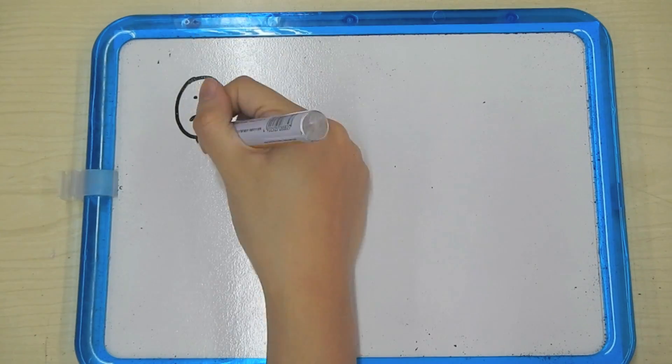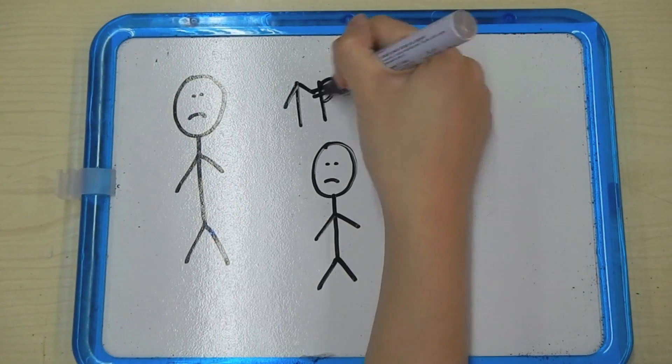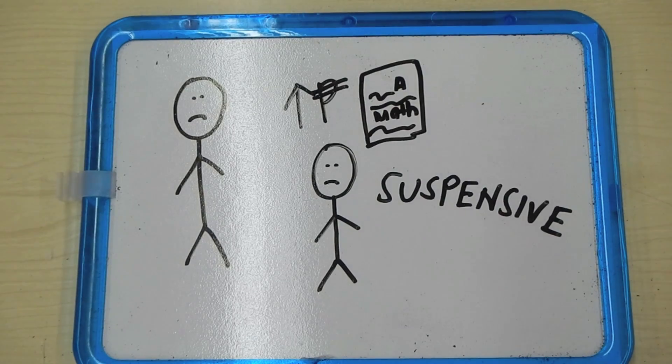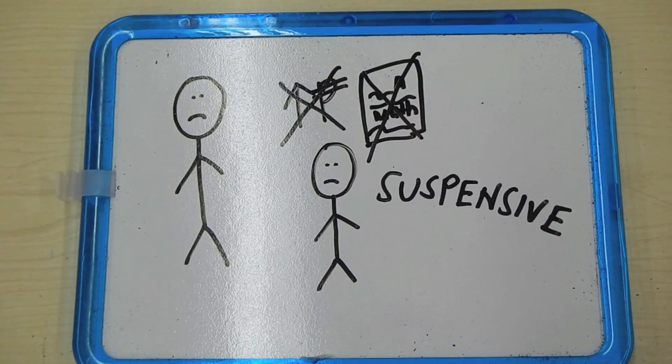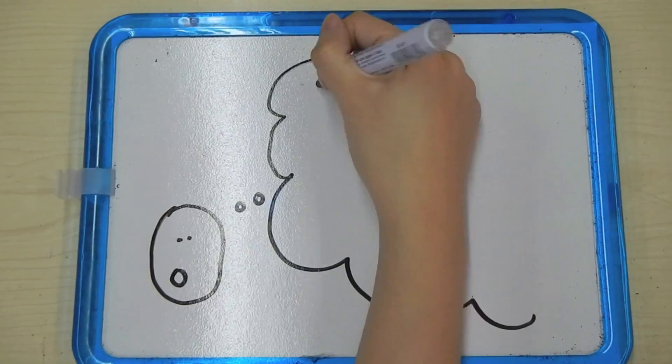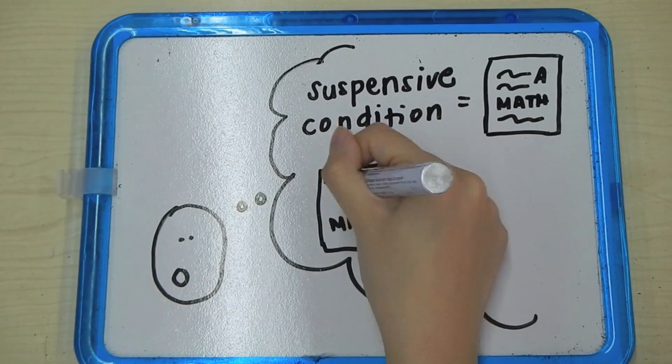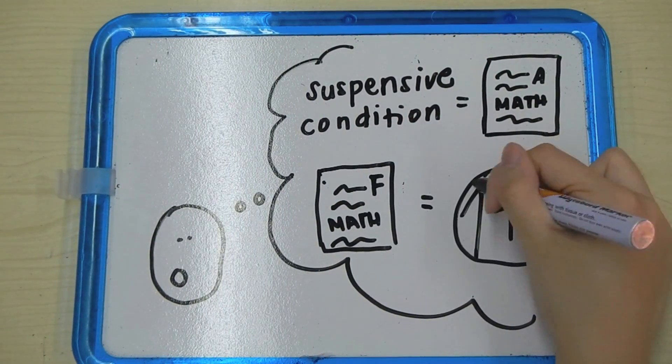In my previous example, the condition given by my dad is a type of suspensive condition, which gives rise to an obligation. If you don't get an A in math, I will not raise your allowance. Thinking back, the suspensive condition here is my getting an A in math. If this doesn't happen, my dad will not be obligated to raise my allowance.